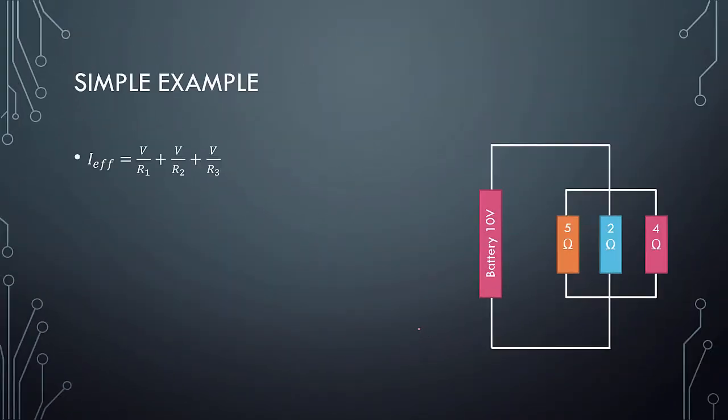So we can use this simple example. In this case, the current effective is just simply V over R1 plus V over R2 plus V over R3. And we just substitute in the values: the value of V is 10, and each one is 5, 2, and 4. But in this case, let's just pull them out. For discussion purposes, we just pull them out.